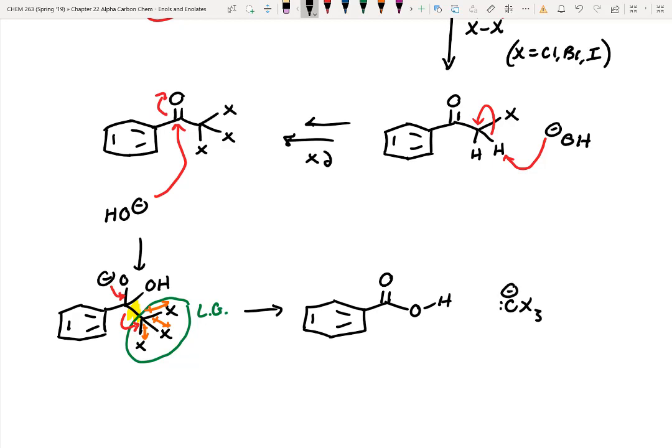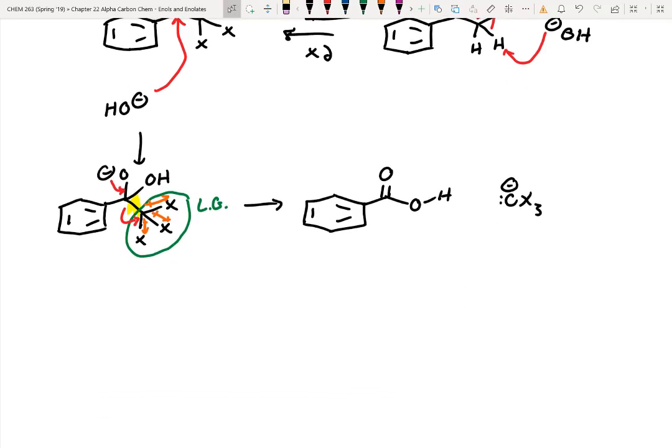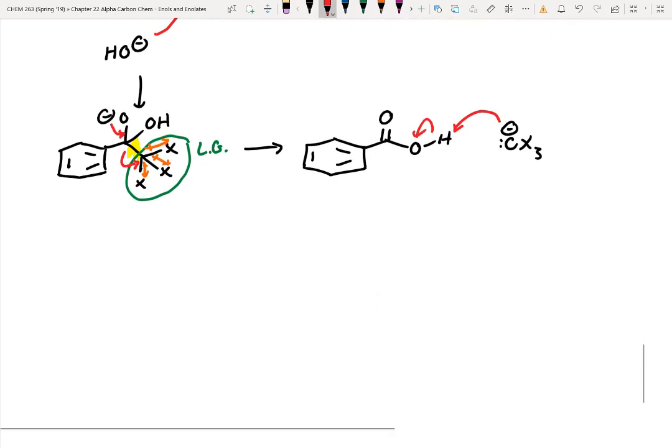Now we've got three halogens coming off that alpha position. We still have excess sodium hydroxide floating around in solution. However, it doesn't have any more alpha protons to attack. What do you think it could do instead? Yeah, now it can attack the carbonyl.